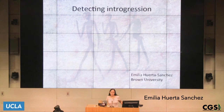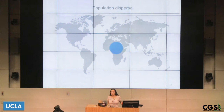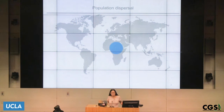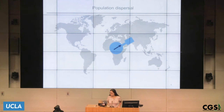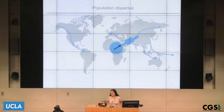In humans, it's well accepted that our origins are in Africa, supported by evidence from genetic data as well as fossil data. Humans originated in Africa and subsequently dispersed within Africa and also left Africa. When they left Africa, there was likely a bottleneck in the populations that moved out. After settling outside of Africa they probably expanded in size, and as they kept moving they probably also shrunk again. They migrated all the way into Europe, into Asia, all the way to Australia and the Americas.